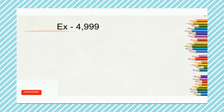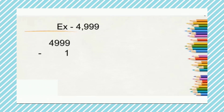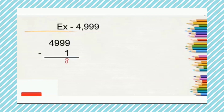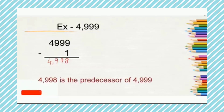Look at an example here. We need to find the predecessor of 4,999. As we have understood, we need to subtract 1 from the given number to get its predecessor. So 4,999 minus 1: 9 minus 1 is 8, 9 minus 0 is 9, 9 minus 0 is 9, 4 minus 0 is 4. So 4,998 is the predecessor of 4,999. We subtracted 1 from the given number to get its predecessor.